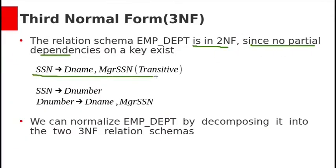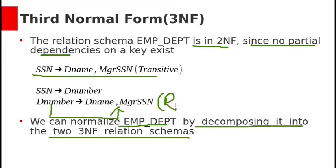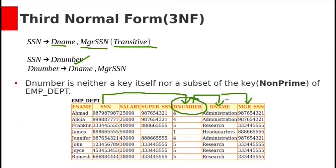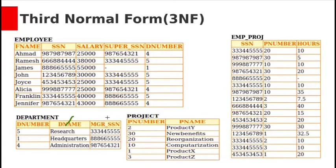The emp_department relation is in 2NF since no partial dependencies exist. However, this transitive dependency means it is not in 3NF. We can normalize emp_department by decomposing it into two 3NF relations. We remove the non-prime attributes dname and manager SSN from the relation and add them to a new relation with D-number as the primary key, and D-number as a foreign key in the original table.